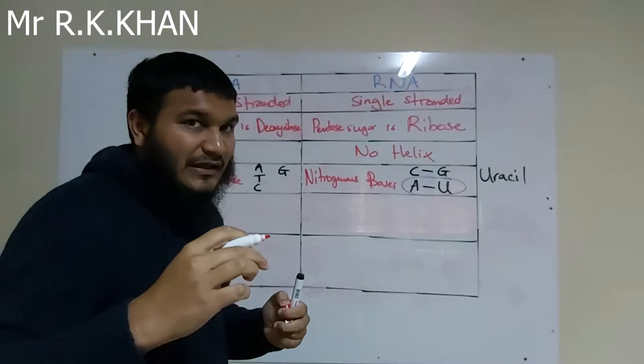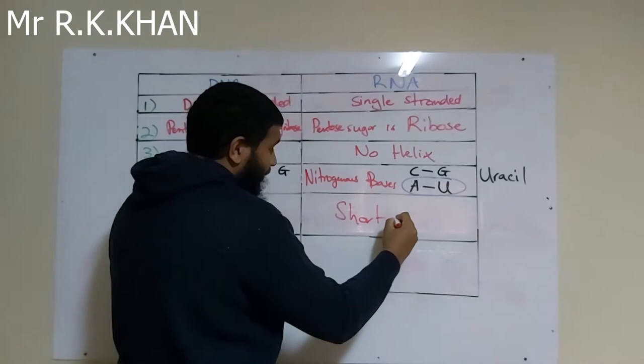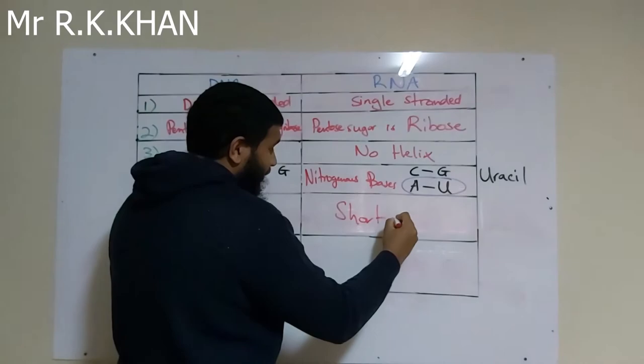The fifth difference is chain length. In DNA, the chains are long — the nucleotides that make up each DNA strand form long chains. Whereas in RNA, the chains are very short.